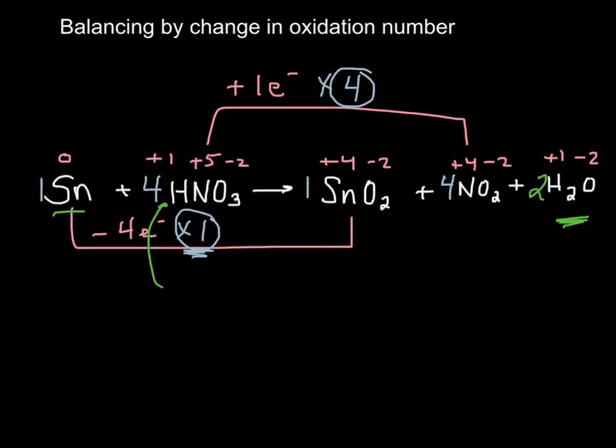And if you look, you've got 1 tin and 1 tin, 4 H's and 4 H's, 4 N's and 4 N's. And on this side, we've got 12 O's. And over here we have 2 and 8 and 2 is 12 O's. So we have successfully balanced this equation. That's just an example of one and we'll do a whole bunch together in class to model.